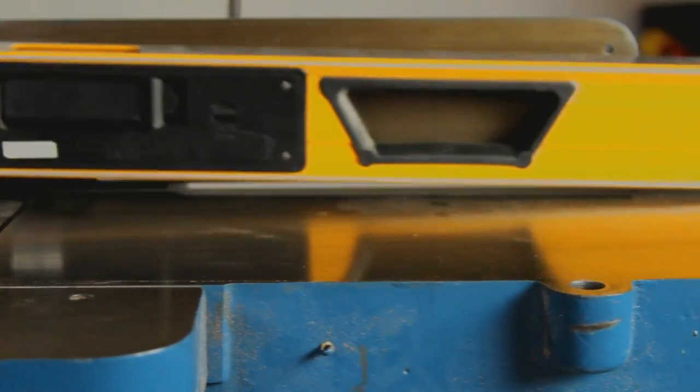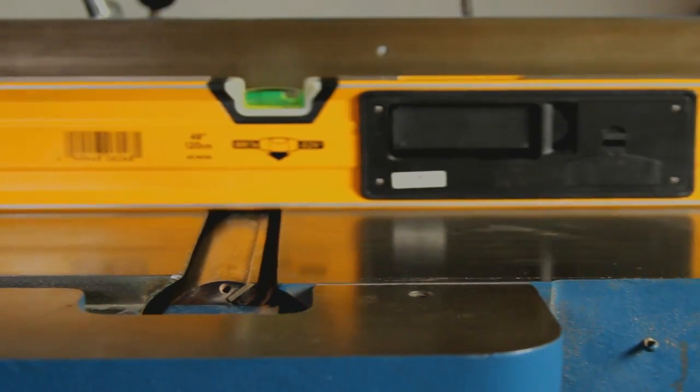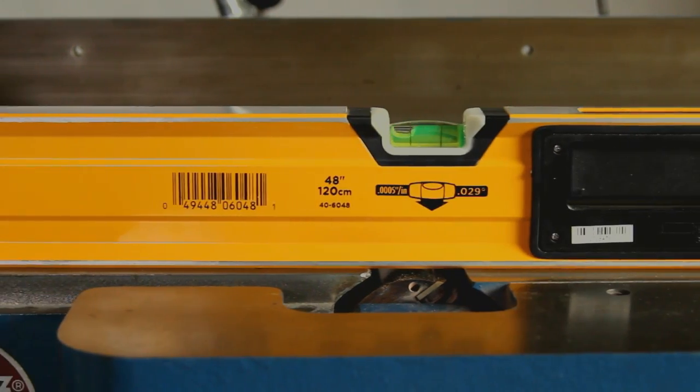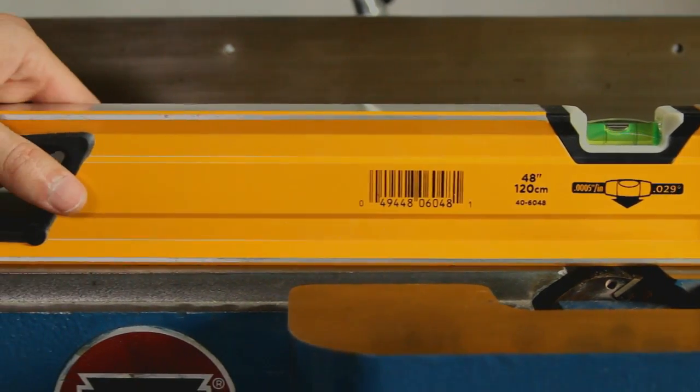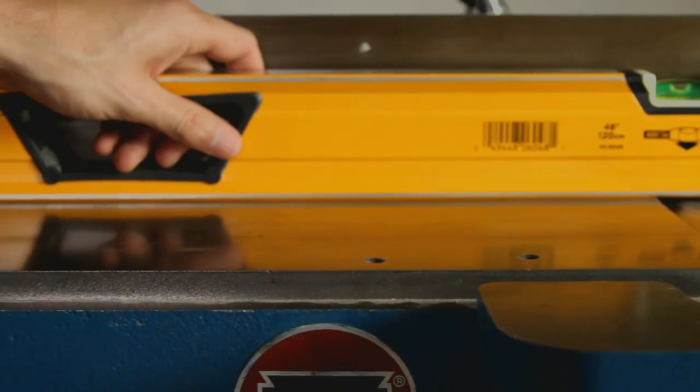Use a straight edge again to ensure that you've closed up those gaps. Depending on how big a gap you have, you'll either need to add more or less shim stock.